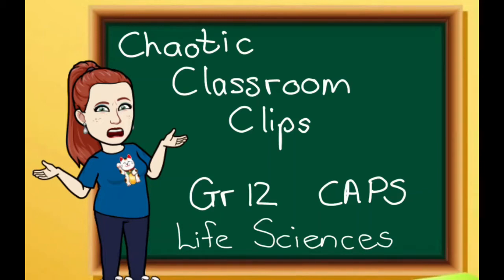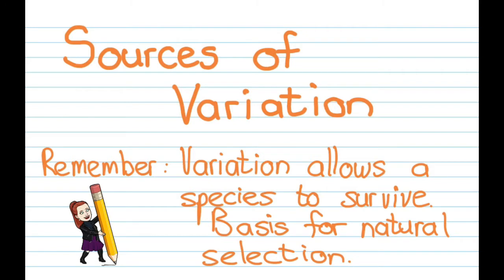Welcome to another chaotic classroom clip. This one is for grade 12 life science learners following the CAPS syllabus. In this video we'll be talking about the sources of variation. Remember, variation allows a species to survive, and you're going to especially see that every time we talk about natural selection in evolution, since it forms the basis for natural selection.